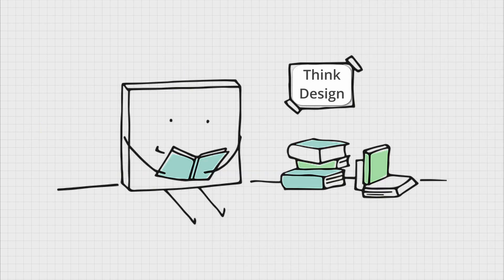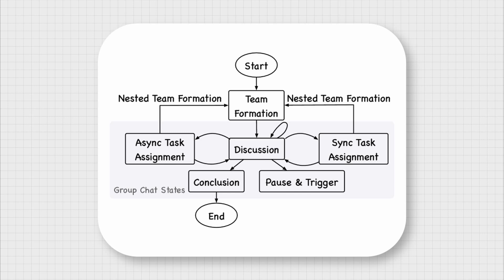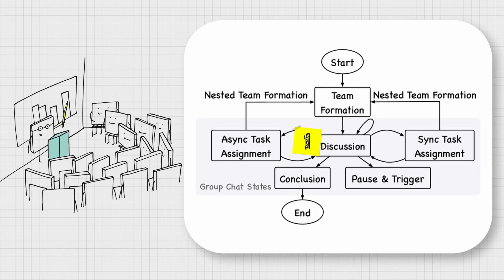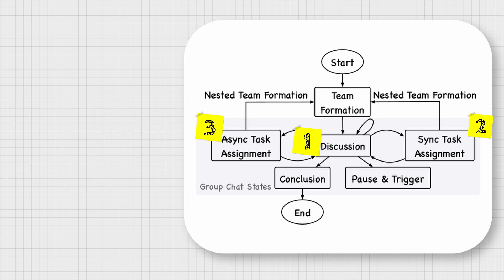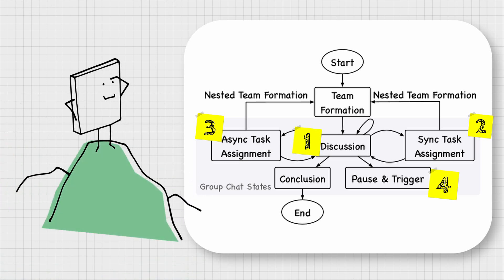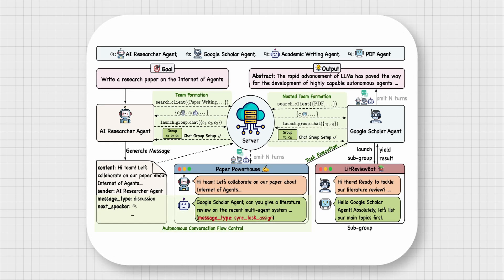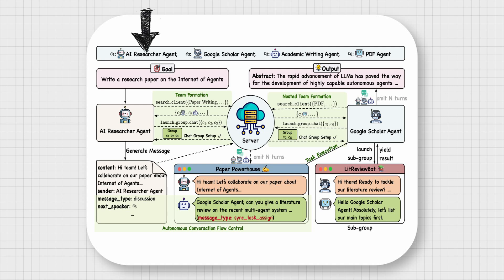The authors have also put a lot of thought into the flow of conversation among agents, as you can see in this image. This is implemented through a five-state design: in the discussion state, agents engage in general dialogue, exchanging ideas and clarifying task requirements. In the synchronous and asynchronous task assignment states, tasks are assigned to specific agents with and without pause. The pause and trigger state waits for the completion of tasks, and finally, the conclusion state produces a final response. They also show how this system works in action when producing a research paper, with interactions between four agents: an AI researcher, a Google Scholar agent, an Academic Writer agent, and a PDF processing agent.